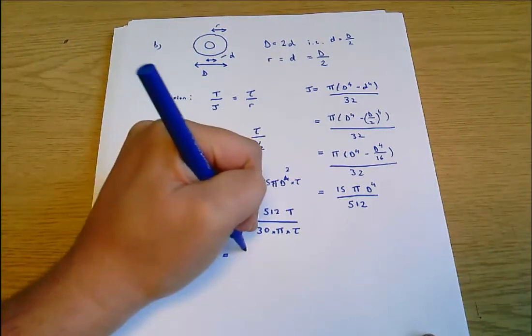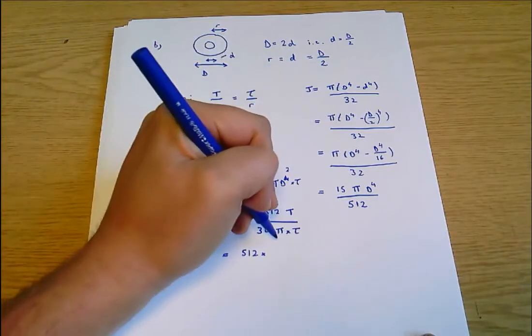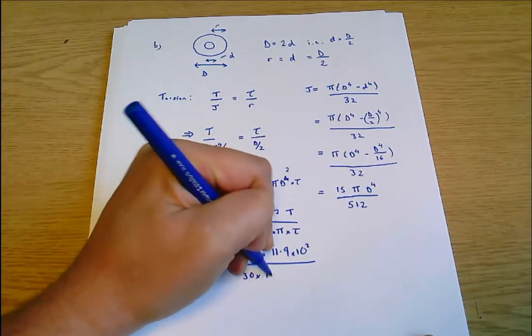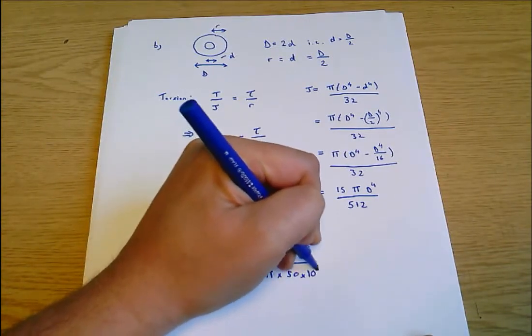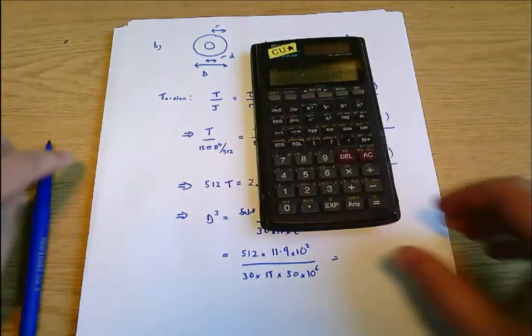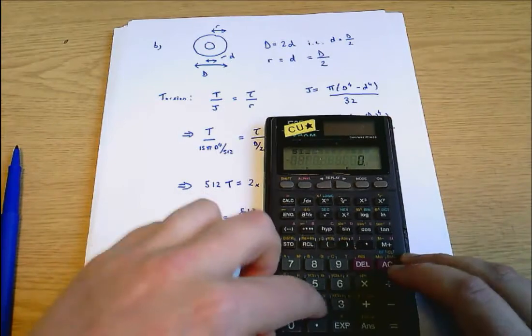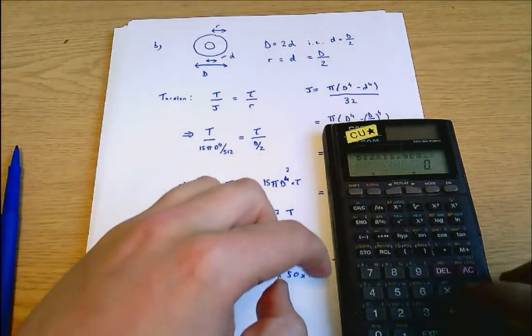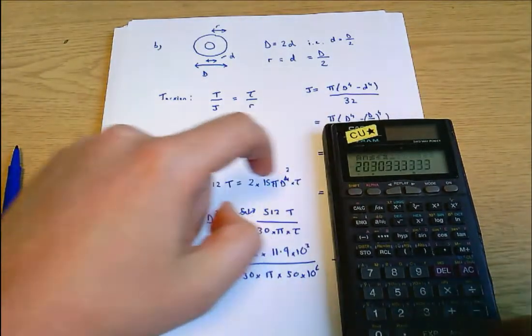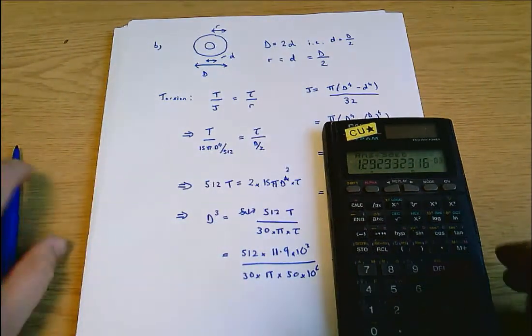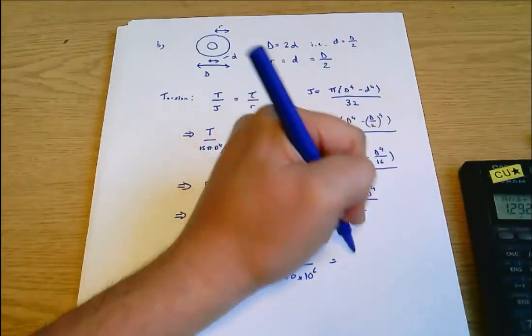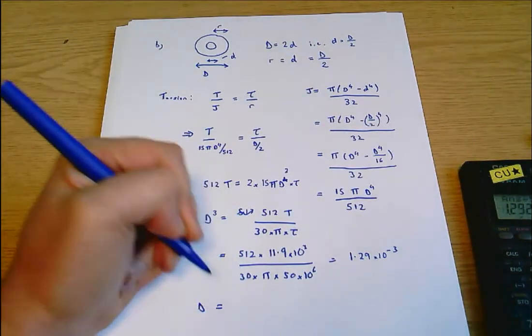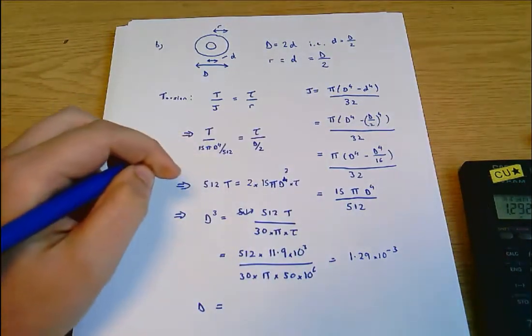So 512 times same torque as before, 11.9 times 10 to the 3, all divided by 30 times π times 50 megapascals. Then I put all of that into my calculator: 512 times 11.9 E3 divided by 30 divided by π divided by 50 times 10 to the 6 gives 1.29 times 10 to the minus 3. Therefore capital D equals the cube root of that which is 0.1089.